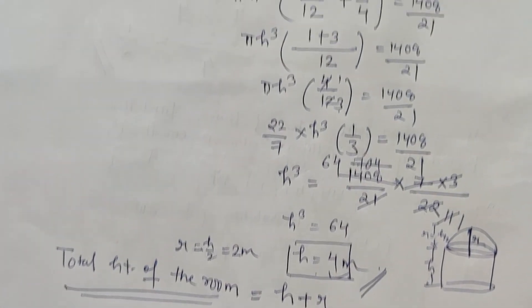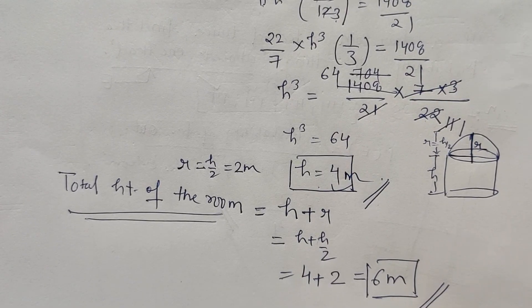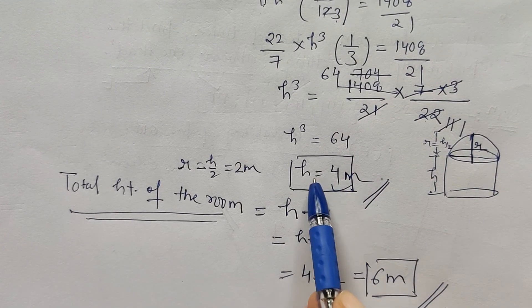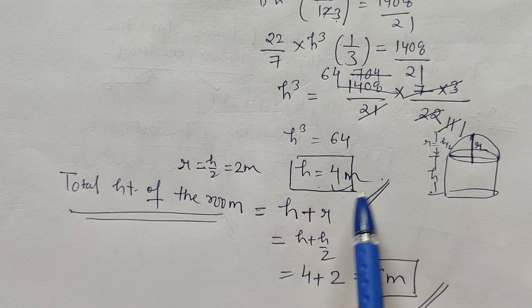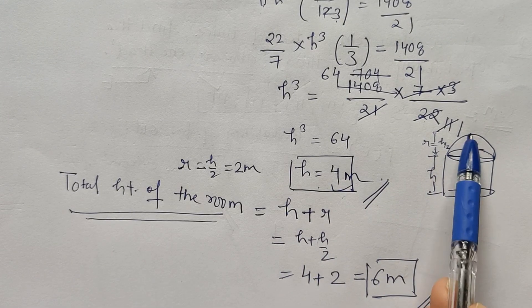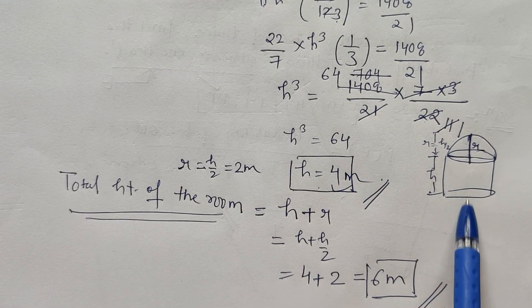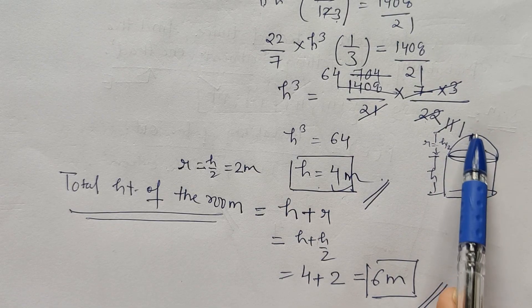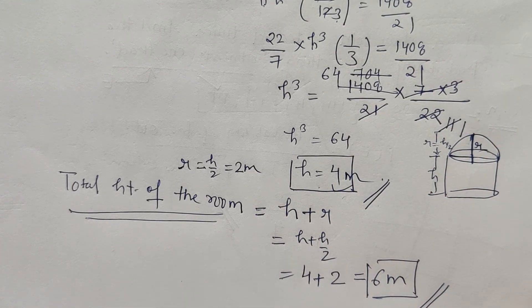I hope the problem is clear to everyone. Don't stop your problem only after getting the height. You also have to add this remaining portion, the remaining height, also to the cylindrical height to get the total height of the room. Thank you.